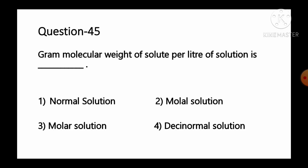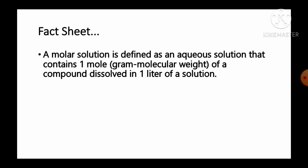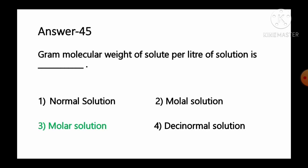Question number 45: Gram molecular weight of solute per liter of solution is called — option 1 normal solution, option 2 molar solution, option 3 molar solution, option 4 decinormal solution. A molar solution is defined as an aqueous solution that contains one mole or one gram molecular weight of the component compound dissolved in one liter of solution. So option number 3, molar solution, is the correct answer.